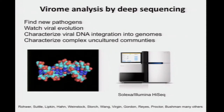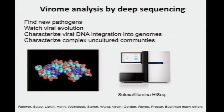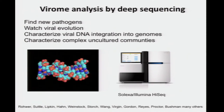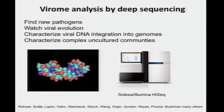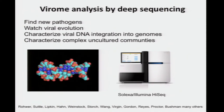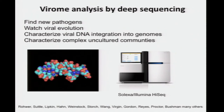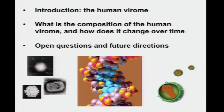Many strong labs have contributed these kinds of studies — Forrest Rohrer, Suttle, Lipkin, Beatrice Hahn, and many others. So what is the composition of the human virome, and how does it change over time?